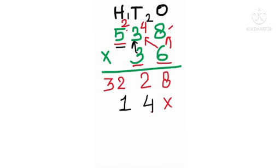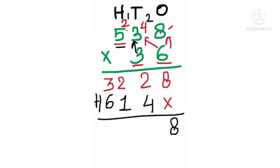Now count the table of 3 five times: 3 fives are 15, plus the carry of 1 gives 16. Now add all the numbers: 8 plus 0 is 8, 2 plus 4 is 6, 2 plus 1 is 3, 3 plus 6 is 9, and 1 as it is.